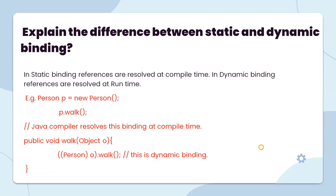For example, when you write Person p equals new Person and call p.method(), Java compiler resolves this binding at compile time — this is static binding. When type casting is involved, the binding is resolved at runtime — this is dynamic binding.